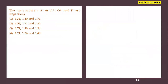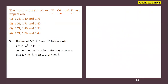The ionic radii of N³⁻, O²⁻, and F⁻ are compared. The rule is: higher the negative charge, bigger the size; increasing positive charge decreases size. So N³⁻ > O²⁻ > F⁻. This corresponds to 1.7 Å, 1.40 Å, and 1.36 Å respectively. The third option is the right answer.